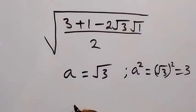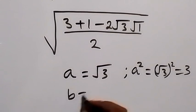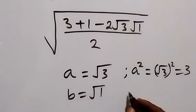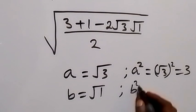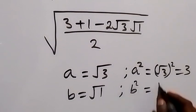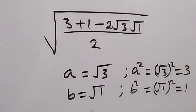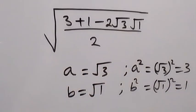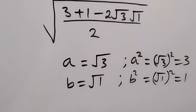Then also, if b is equal to square root of 1, then b squared as well will be root 1 squared, which is equal to 1. Then if we write this, what we have here in form of a and b, so we are going to have root